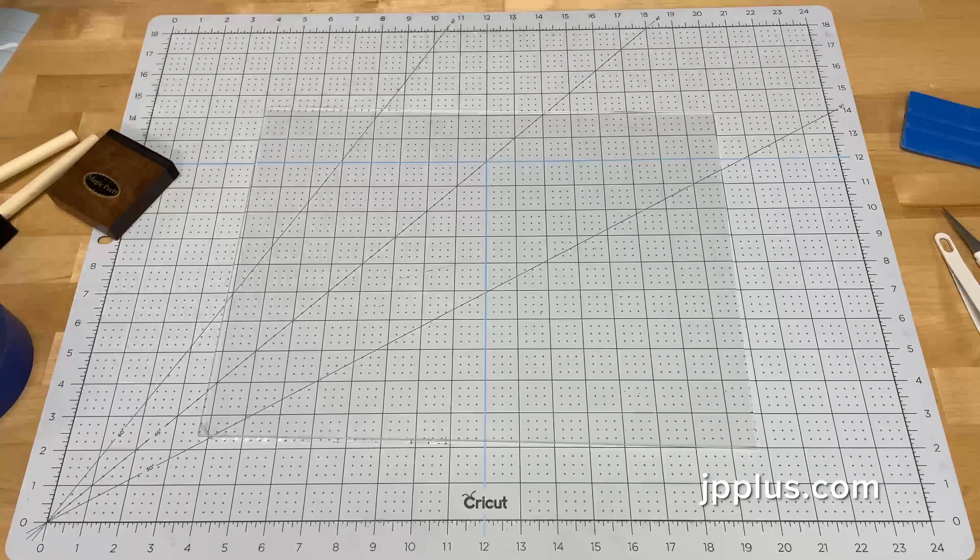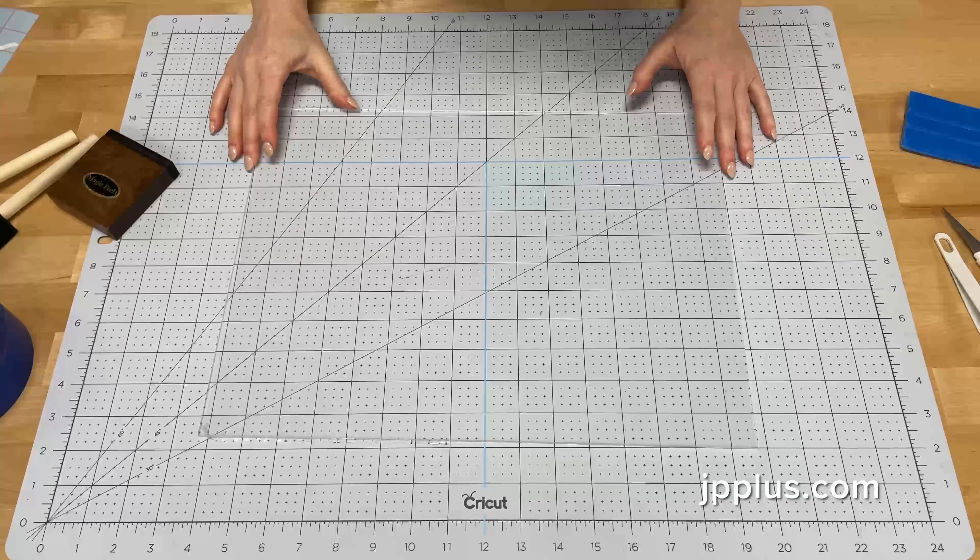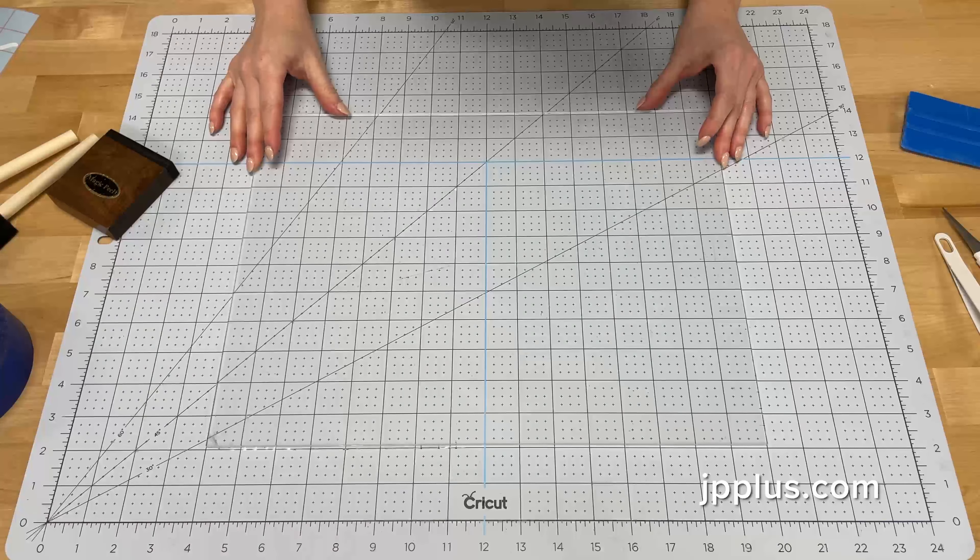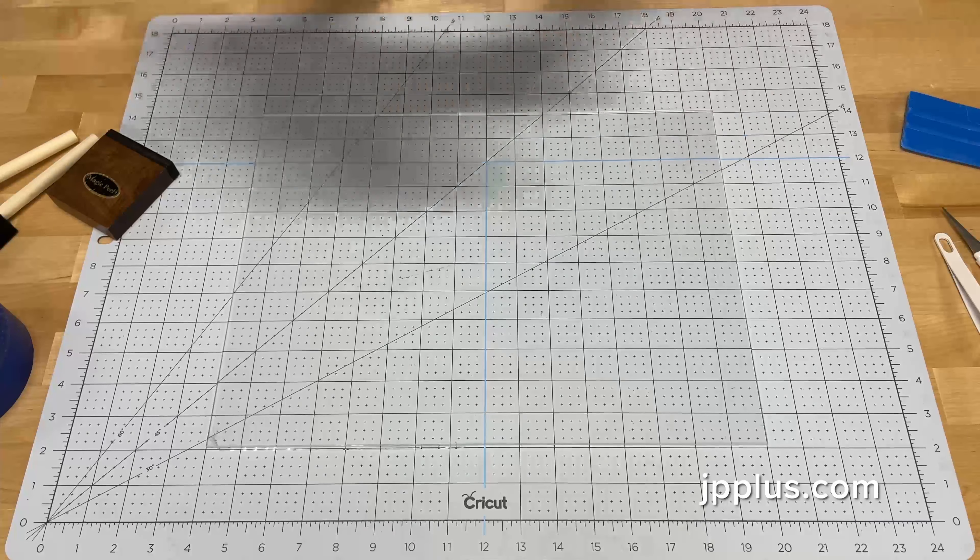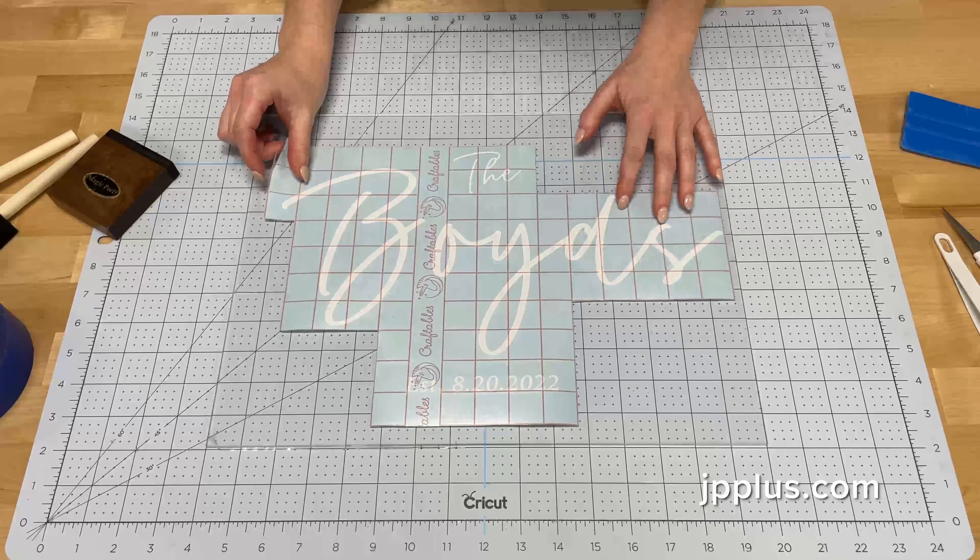Once I've removed my masking, I like to use this self-healing Cricut mat to line up my acrylic so that when I put the transfer on I have lines to use to keep it straight.